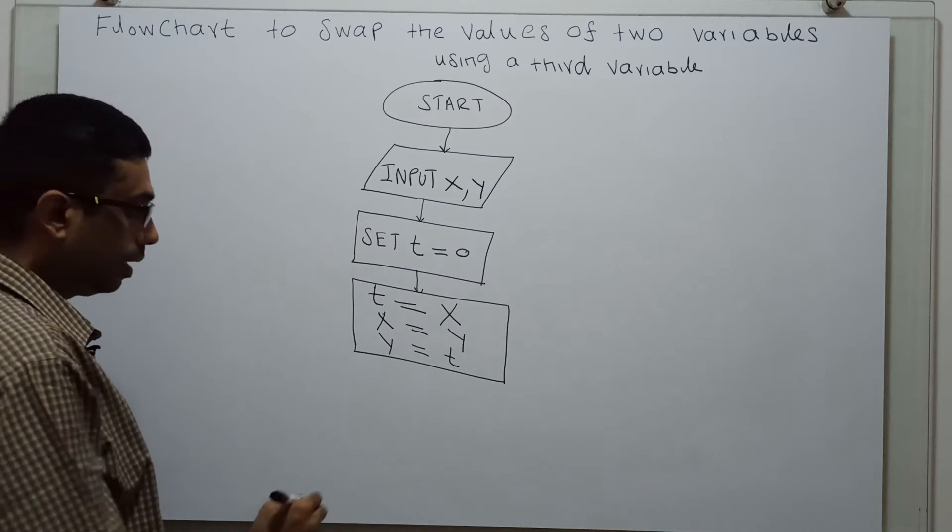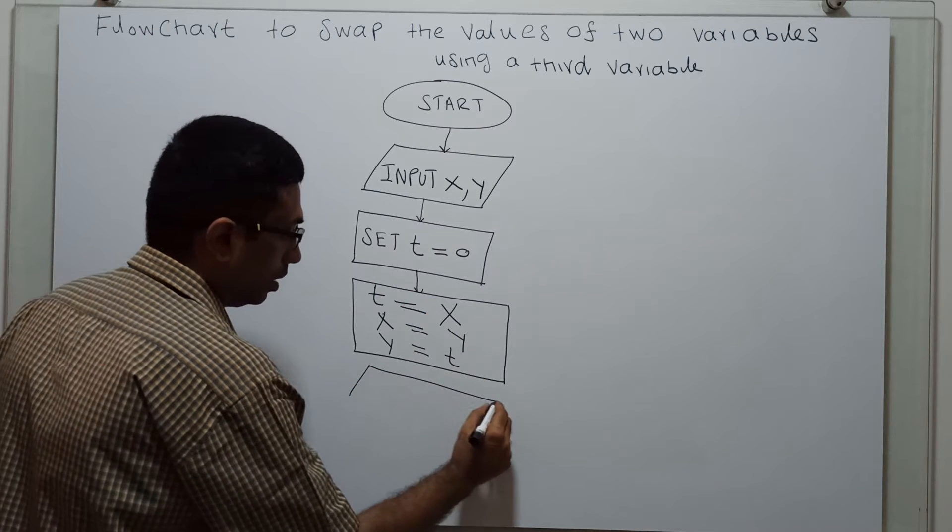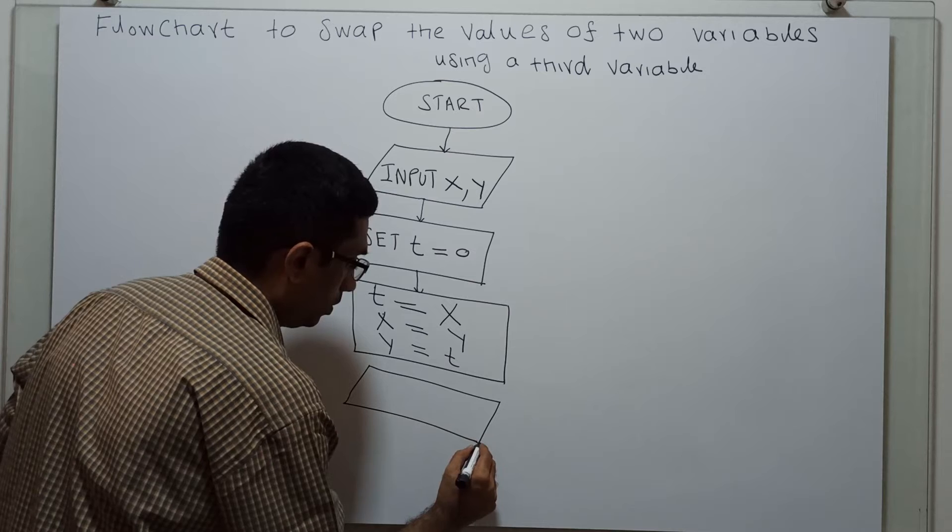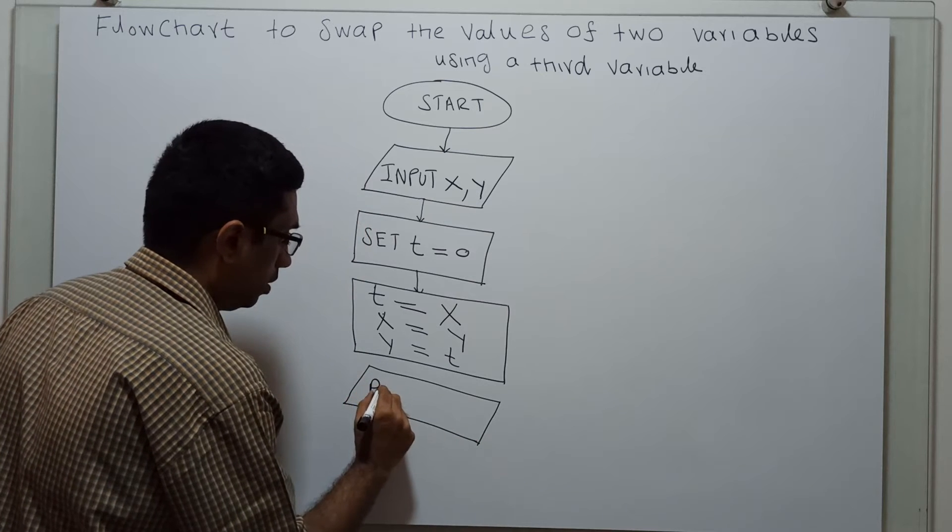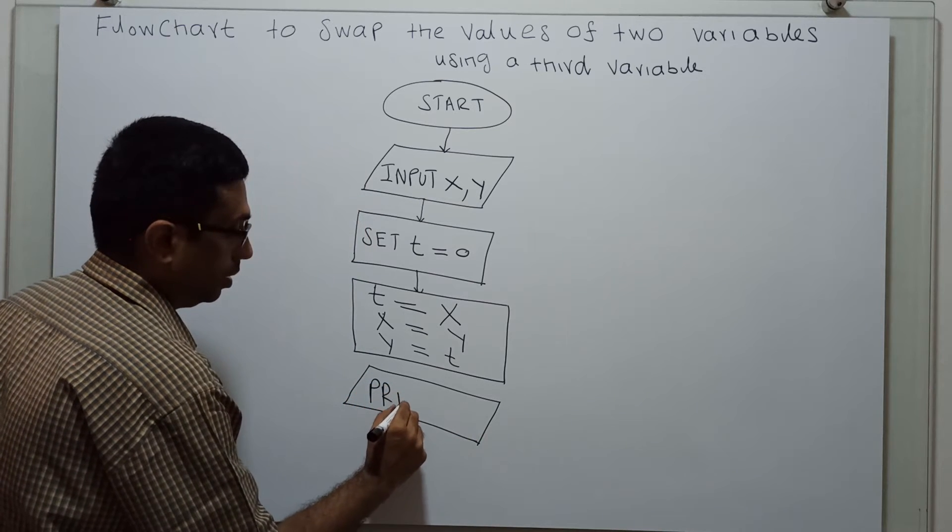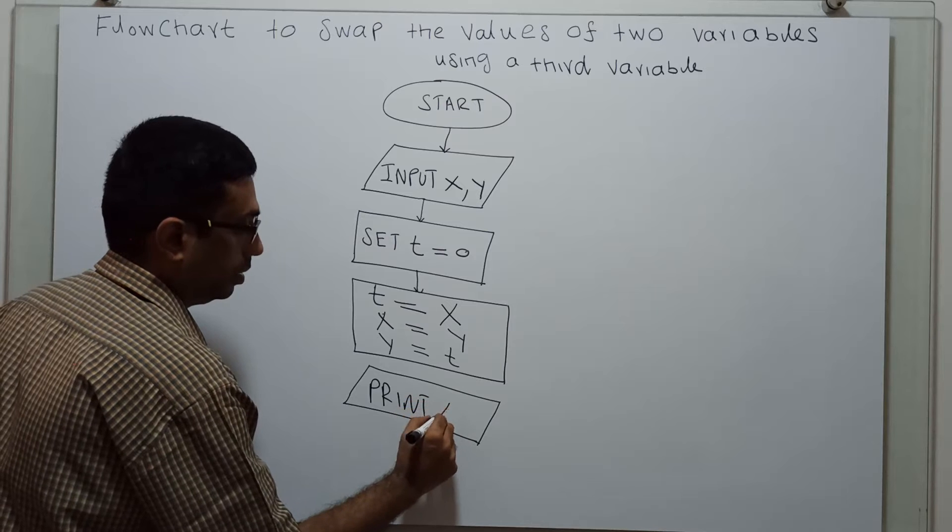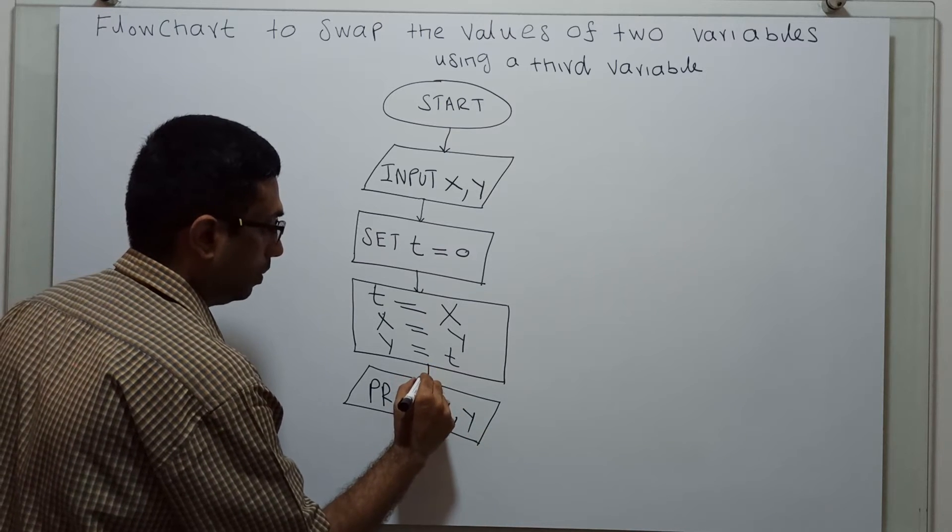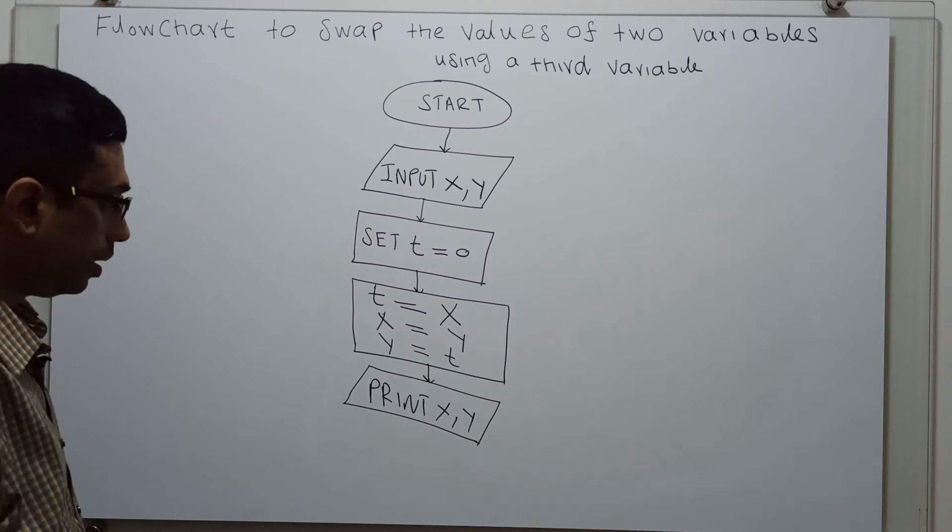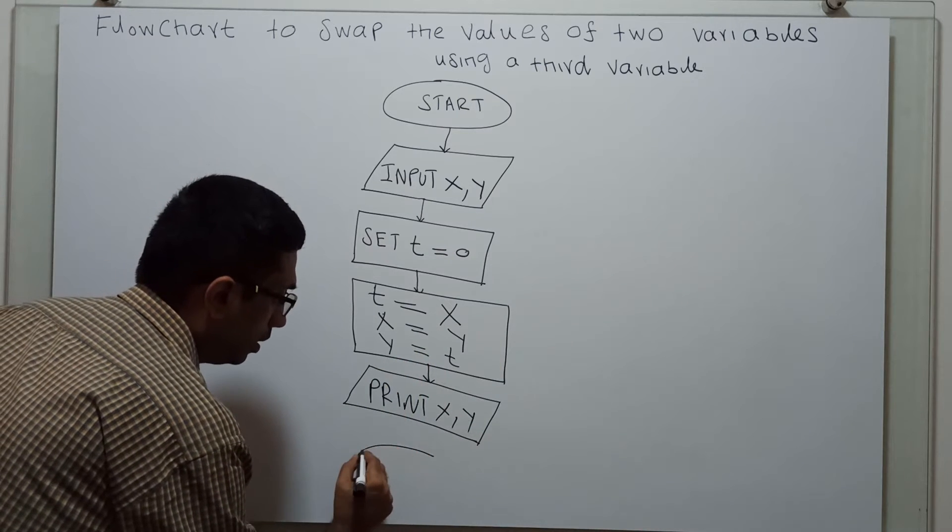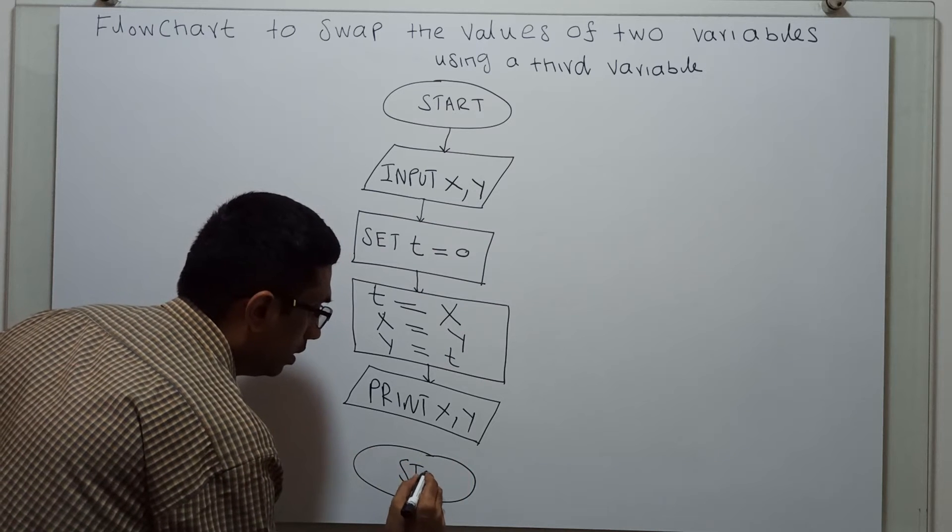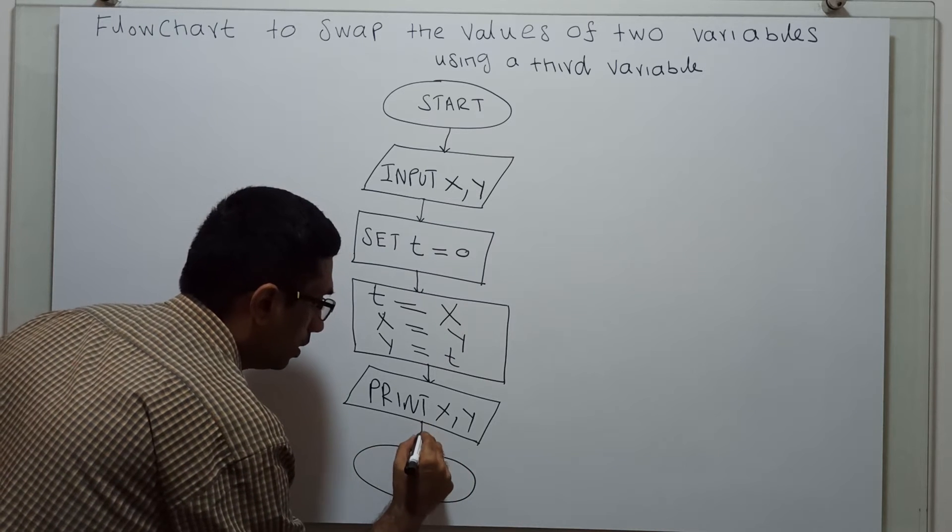Now, I am printing x and y. Print x comma y. This is the logical end of the flowchart. That is, stop.